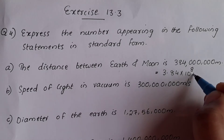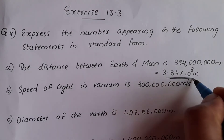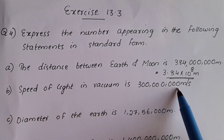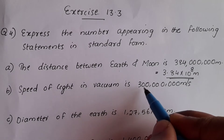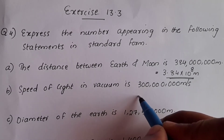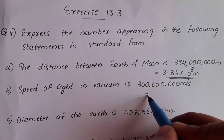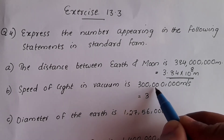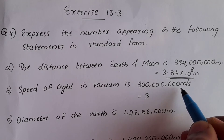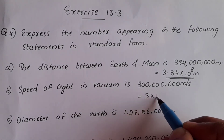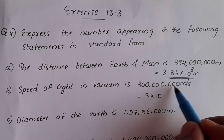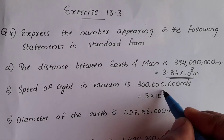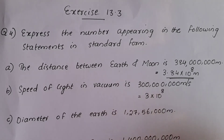The second question is the speed of light in vacuum — a large number. Using the standard formula, it is equal to 3 into 10 raise to 8. We have a total of 9 digits, so 9 minus 1 is 8. Therefore, 3 into 10 raise to 8.